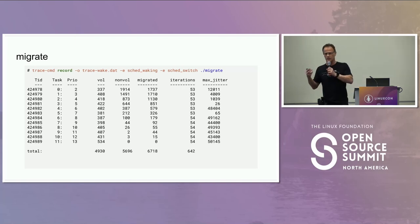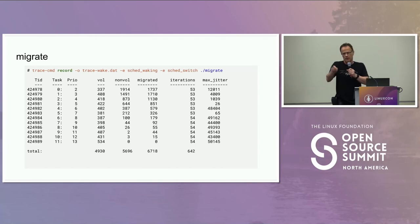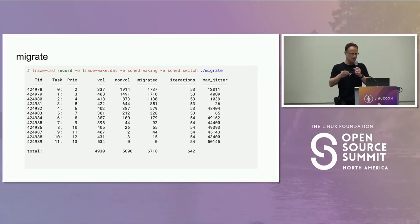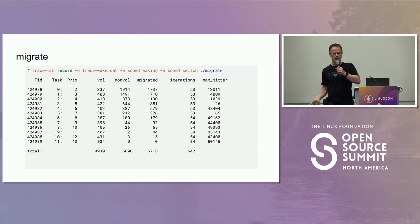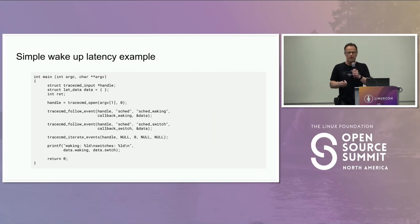I ran trace command record with the -o option to name the output file trace-wake.dat, and enabled the sched_waking and sched_switch events plus the migrate event. Now I want to do some analysis on that trace.dat file.